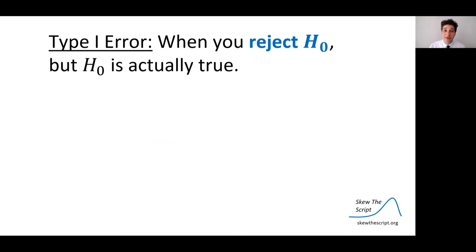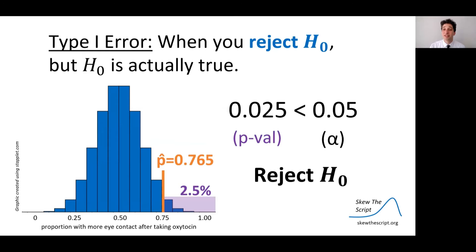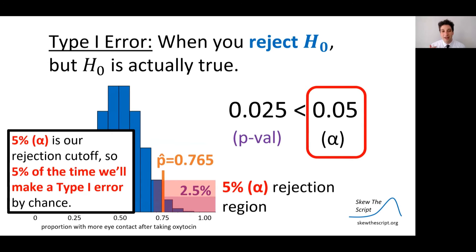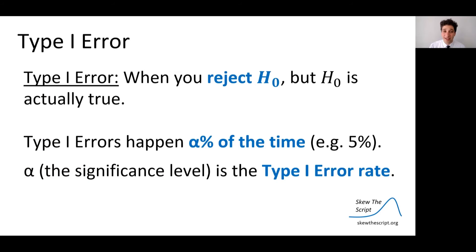Because of the low p-value, we rejected the null using a 5% alpha level — that's the rejection region, the bar of unusualness before rejecting the null. 5% of the time, we'll make a type 1 error by chance. That's the risk we take in making this conclusion. So type 1 errors happen alpha percent of the time — typically 5%. Alpha is called the type 1 error rate. To reduce your chance of a type 1 error, you could reduce your alpha level, for example from 5% to 1%, only accepting the highest 1% as convincing enough to reject the null.